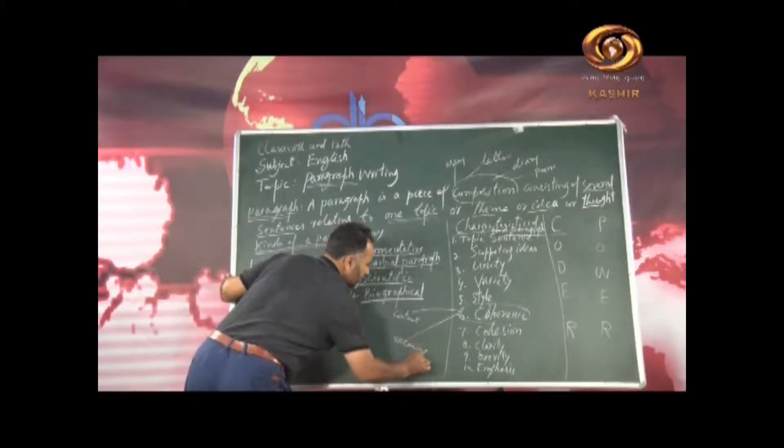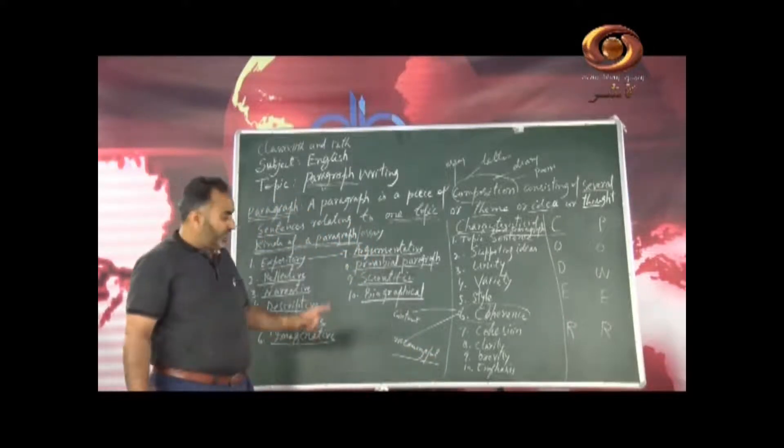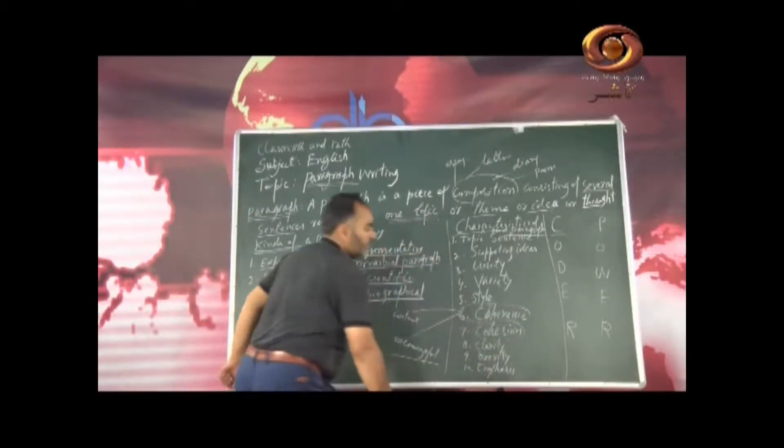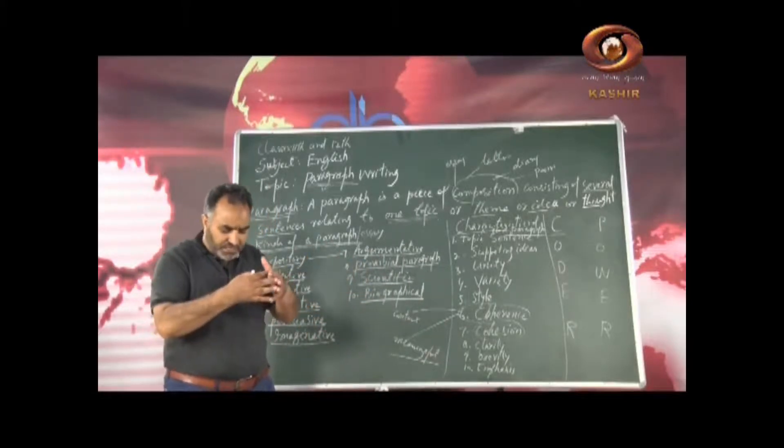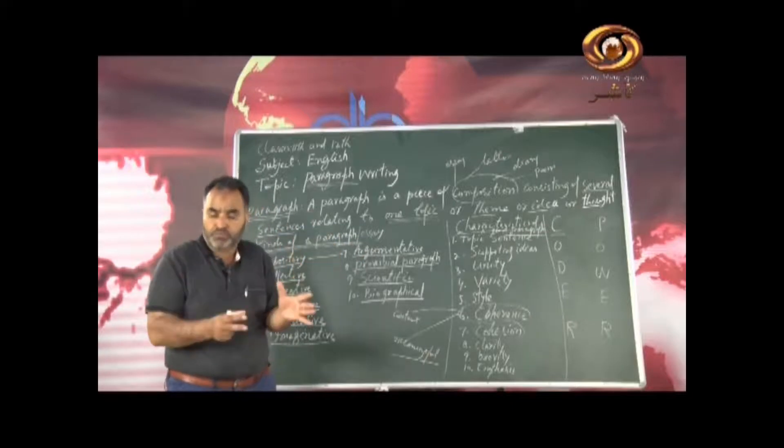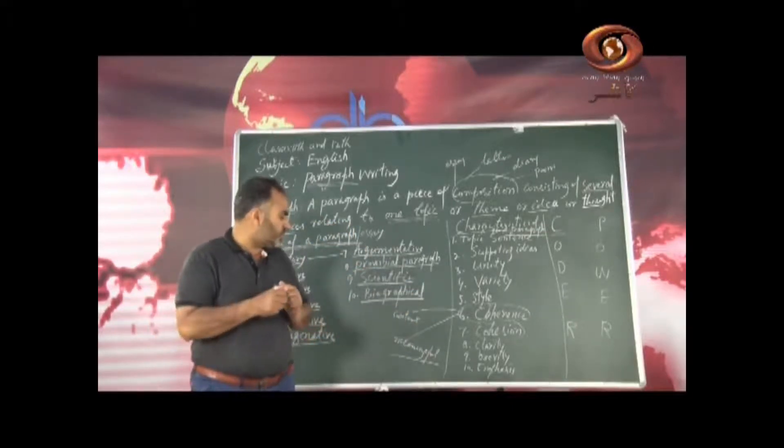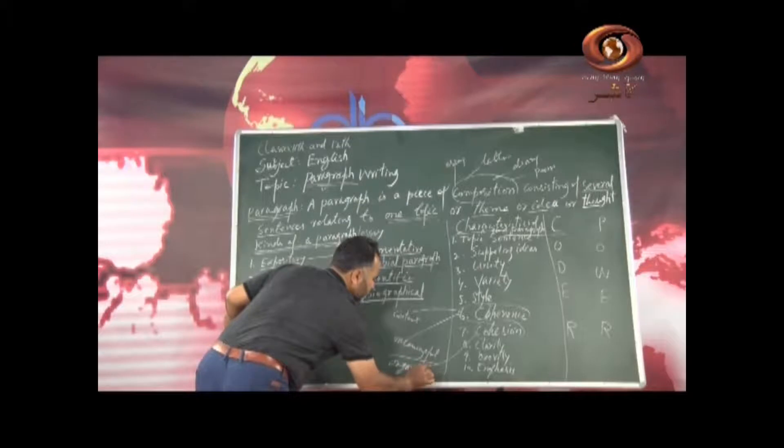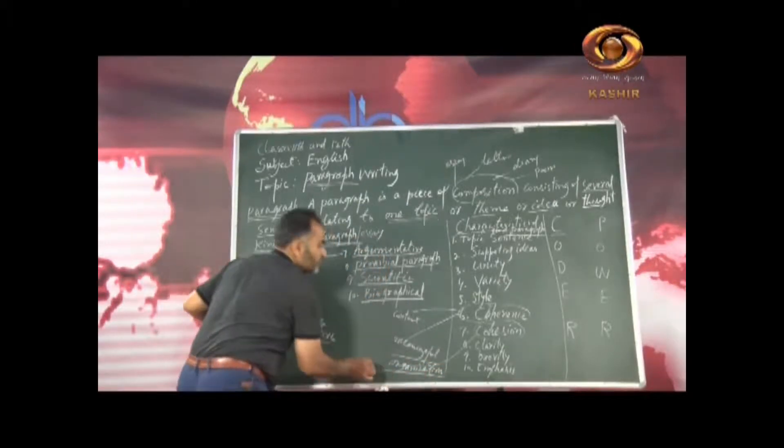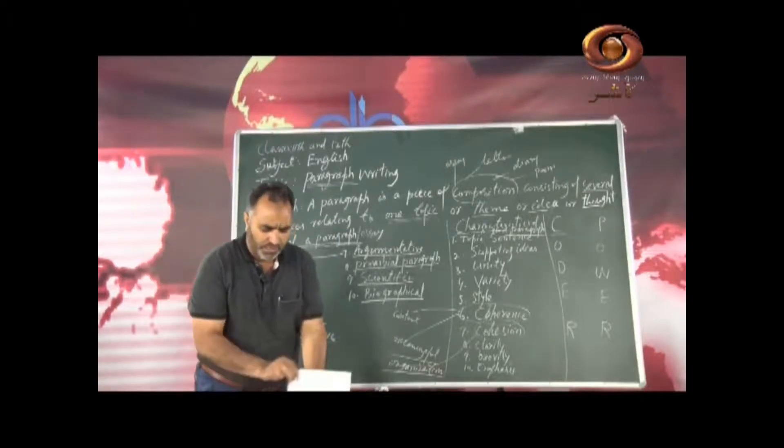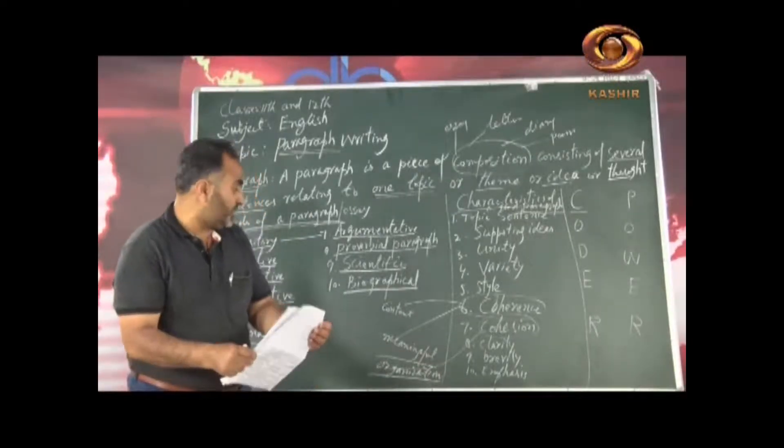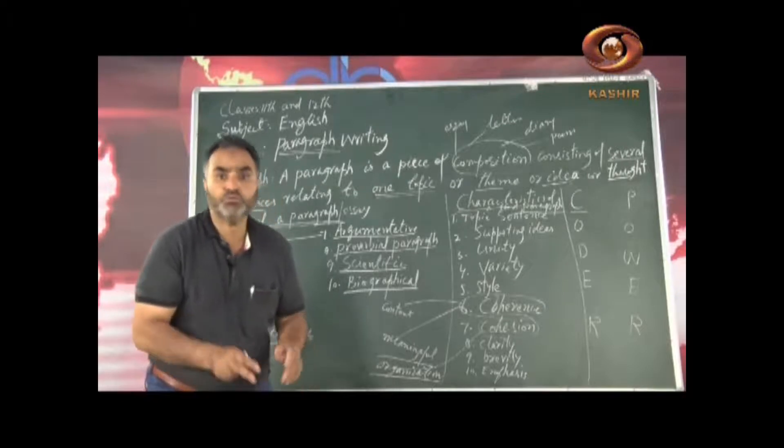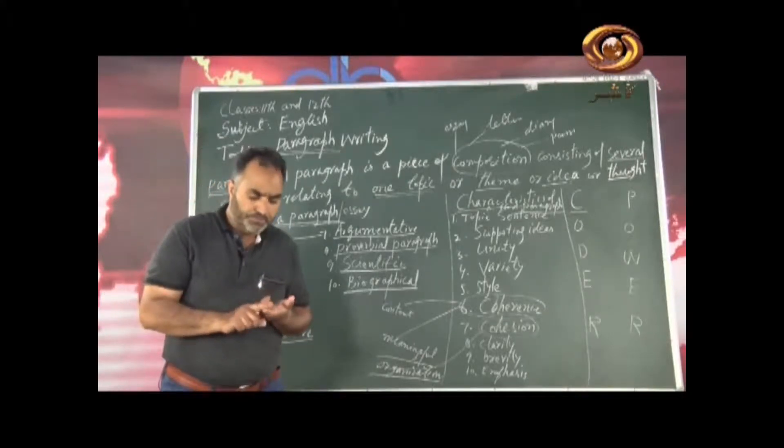And then with coherence another very important thing which we have in a paragraph is cohesion. So for cohesion it means connecting different sentences together with the help of cohesive devices also called transitional devices. Cohesion refers to the organization. It refers to the organization. You can say how to organize things together. In other words, cohesion refers to language in a paragraph. This is very important. This coherence and cohesion is very important. In order to achieve coherence in a paragraph, we use certain cohesive devices.